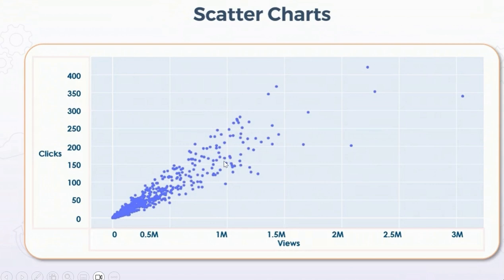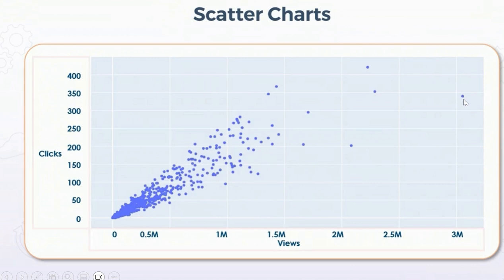Each point gives information about itself — what that point represents. We can see that one point has more clicks than others, more than 400 clicks, and another has maximum views of more than 3 million. Each and every point in the scatter plot is talking about only two variables and giving information individually.